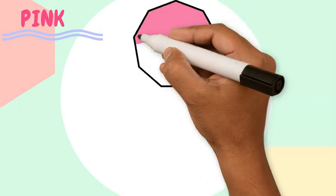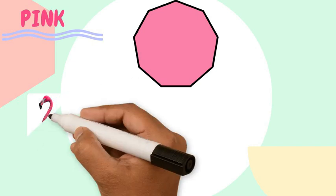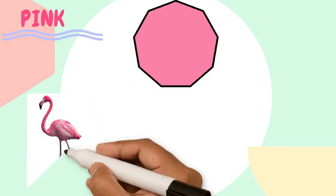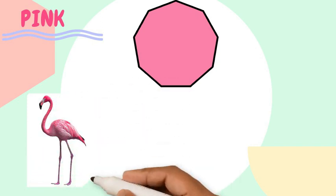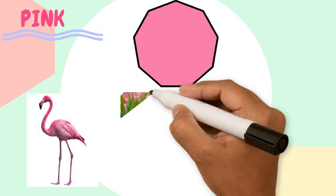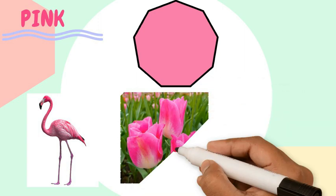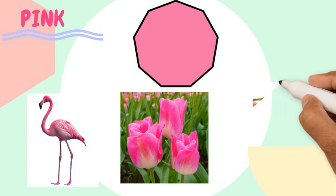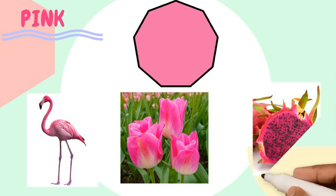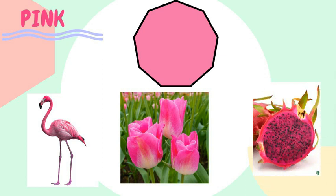Let's see some things which are in pink color. First of all, we have flamingo. Flamingo is a bird. Next, we have tulip. And we also have pink dragon fruit.